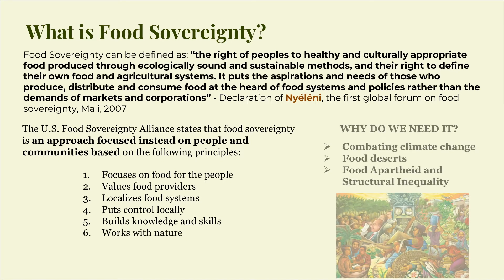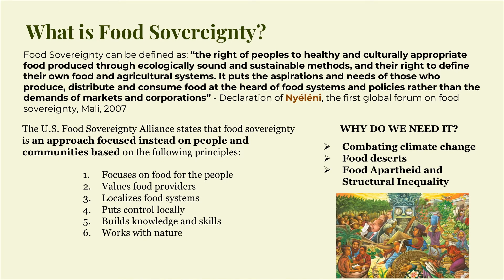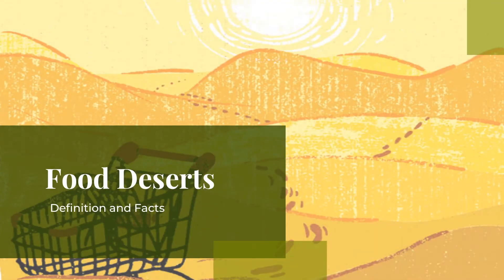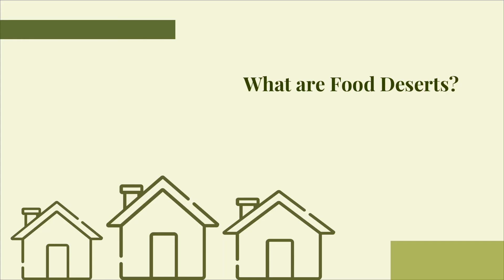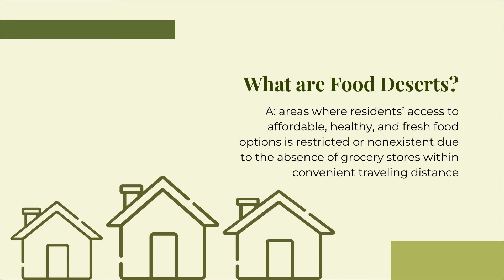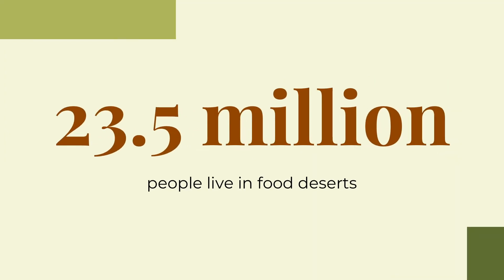So why do we need food sovereignty? In the next sections, we will discuss how food sovereignty can help to address food deserts, structural inequality, and climate change. Food deserts are one of the many negative results of the lack of food sovereignty in the United States. Food deserts are areas where residents' access to affordable, healthy, and fresh food options is restricted or non-existent due to the absence of grocery stores within convenient traveling distance. Surprisingly, about 23.5 million people live in food deserts, and nearly half of them are also low income.